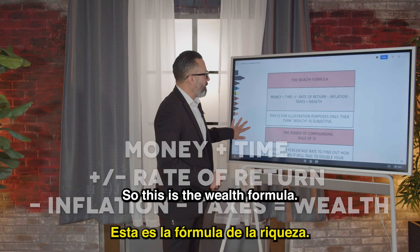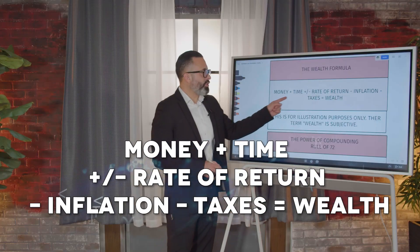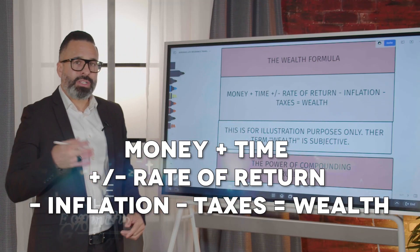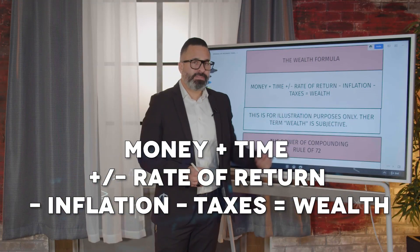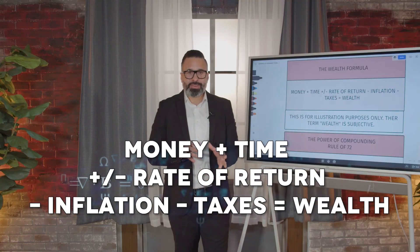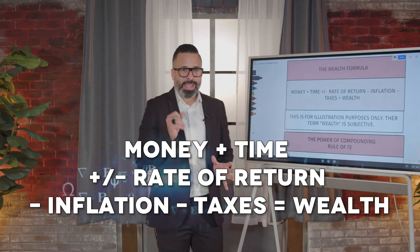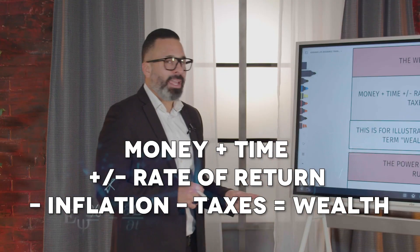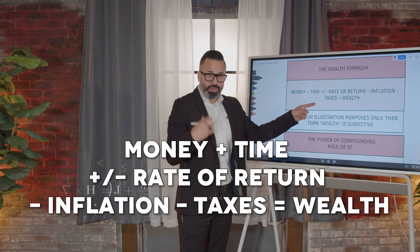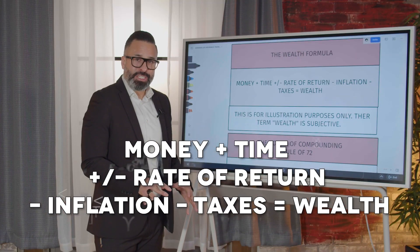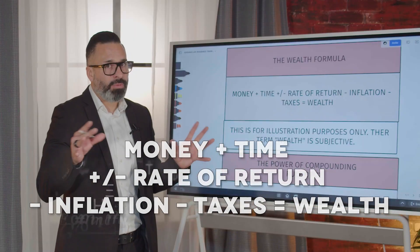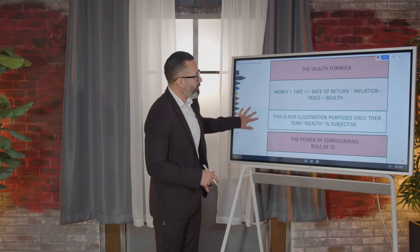So this is the wealth formula: you take your money plus your time, add or subtract the rate of return, minus inflation, minus taxes, and now you've got your wealth. One more time — money plus time, add or subtract rate of return, minus inflation, minus taxes, and then you have your wealth. That's the wealth formula.